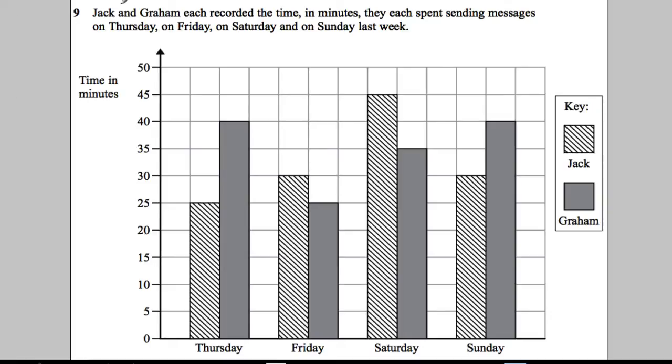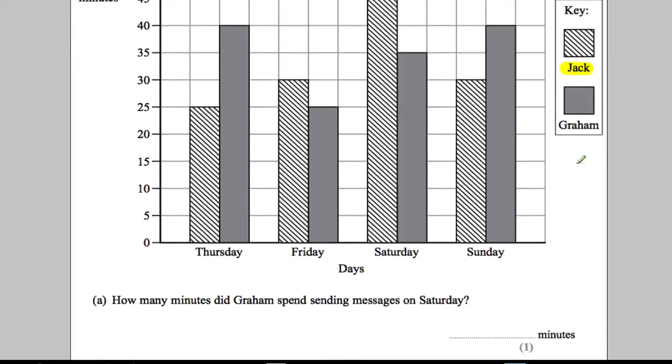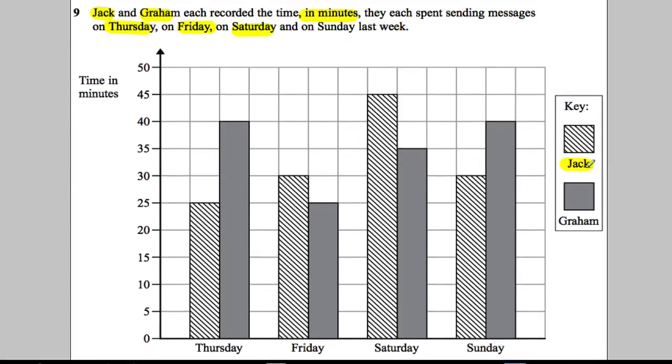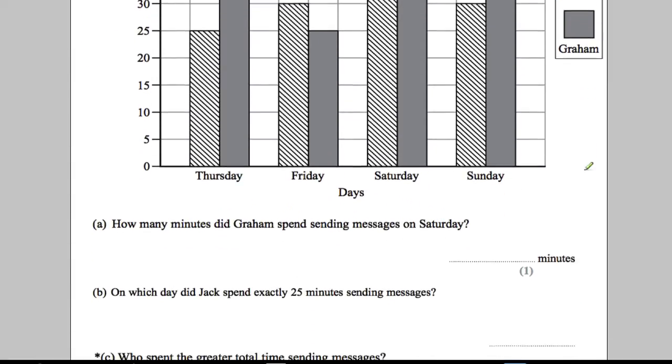Question 9. Let's get our highlighter out. Jack and Graham each recorded the time in minutes that they spent sending text messages on Thursday, Friday, Saturday and Sunday. Jack is the diagonally crossed lines and Graham's the filled in grey lines.